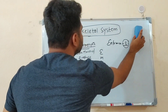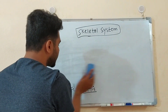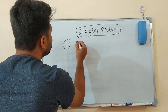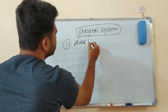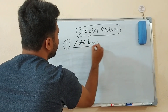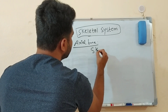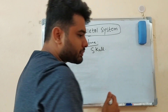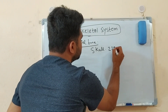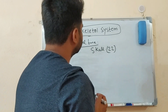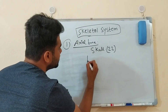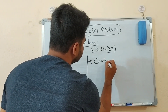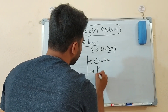Now we will discuss all the bones. We need to remember the axial bones. In the axial skeleton, we have the skull. In the skull, we have 22 bones. Now we need to remember the skull — it has the cranium and the facial bones.